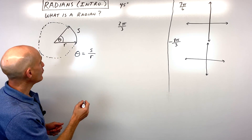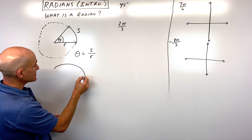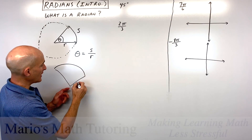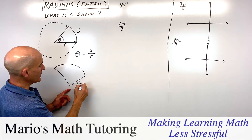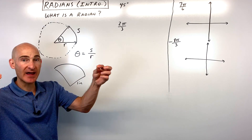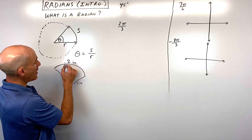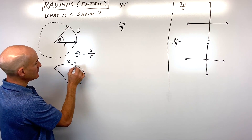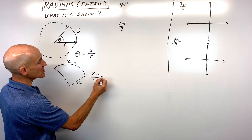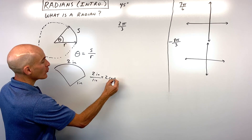A quick example would be: say you had an arc — an arc is just a part of a circle — and say that this radius here was one inch. Say that this arc length, if you were to straighten it out, was two inches. Then the ratio of the arc length divided by the radius would be two inches divided by one inch. So we would call this two radians.